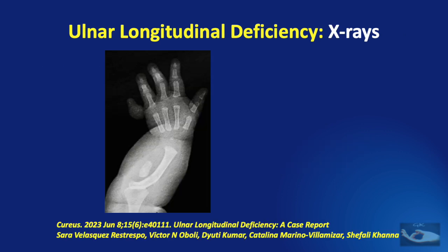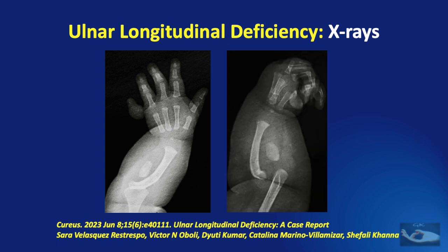This X-ray shows the left forearm and hand radiograph depicting a small ovoid bone in the expected location of the ulna without articulation to the humerus or to the wrist. This X-ray shows moderate bowing of the radius and frank dislocation with respect to the humerus.